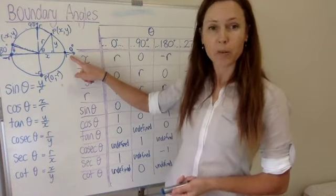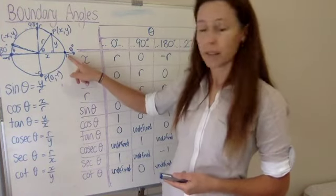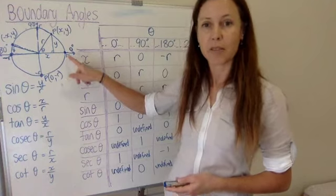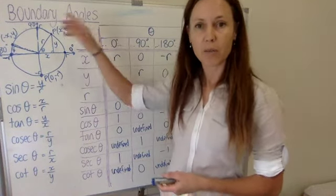So for example, zero: the sine of zero will be exactly the same thing as the sine of 360, the sine of 720, the sine of 1080, every time you go around.